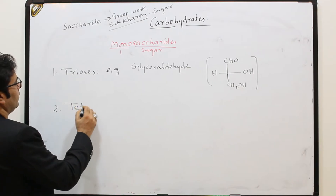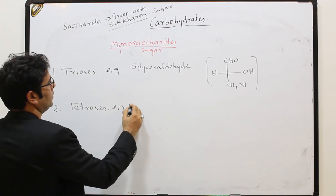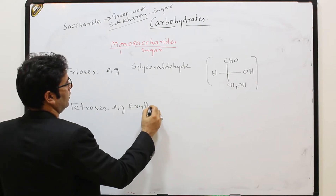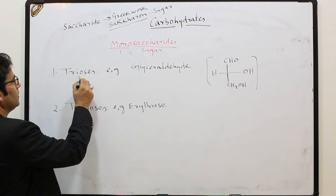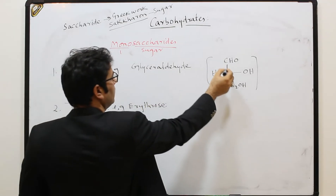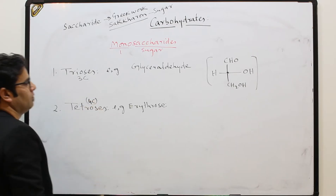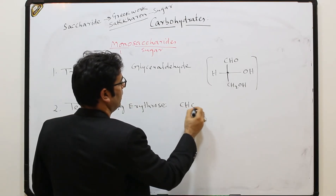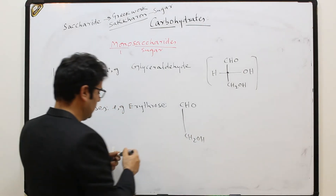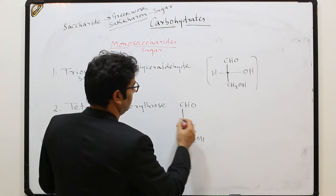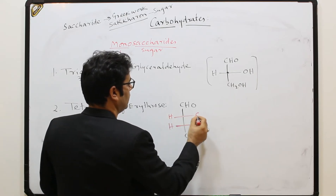Number two, we have tetroses — for example, erythrose. The triose glyceraldehyde has three carbon atoms: one, two, three. Erythrose is a four-carbon compound and also has an aldehyde form. Its formula is CHO at top, then H-OH, H-OH, and CH2OH at the bottom.